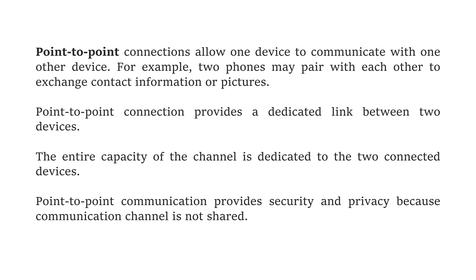First, we can see the point-to-point connections. This connection allows one device to communicate with another device. For example, two phones may pair with each other to exchange information or pictures. This point-to-point connection provides a dedicated link between two devices — there is one sender and one receiver. The entire capacity of the channel is dedicated between the two connected devices, and point-to-point communication also provides security and privacy because the communication channel is not shared.